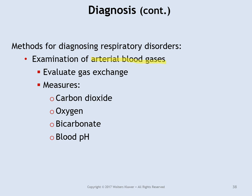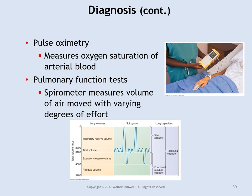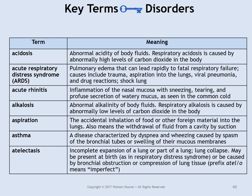You can diagnose respiratory disorders by radiographs, CT scans, MRIs, bronchoscopies, and removing pleural fluid with a needle via thoracentesis to identify a causative agent. Arterial blood gas tests show how well the blood is exchanging CO2 and oxygen — you can look at carbon dioxide, oxygen, bicarbonate, and blood pH. Pulse oximetry measures oxygen saturation. Pulmonary function tests produce a spirogram showing total lung capacity, forced inhalation and exhalation volumes, and tidal volume — your normal inhalation and expiration.